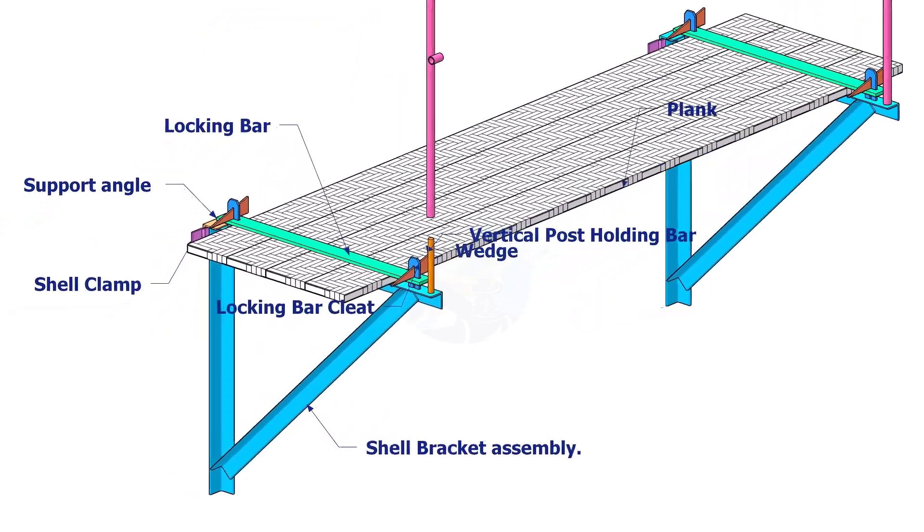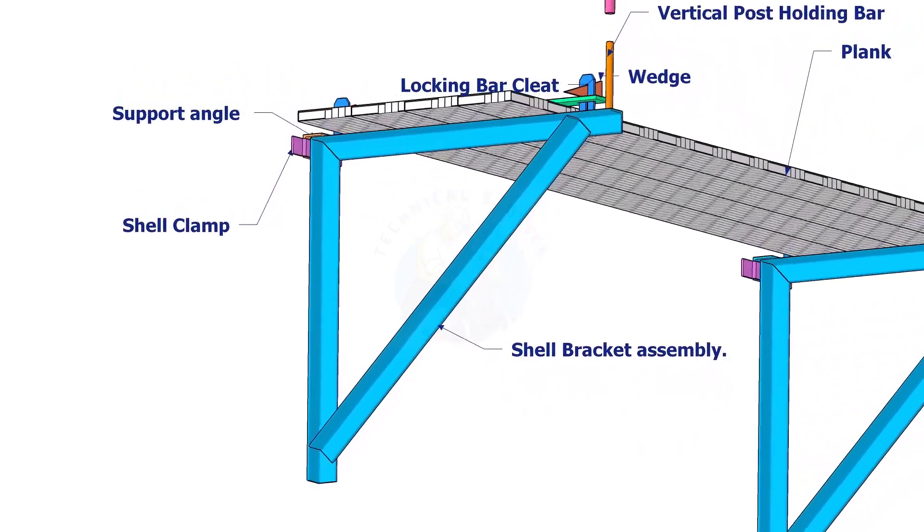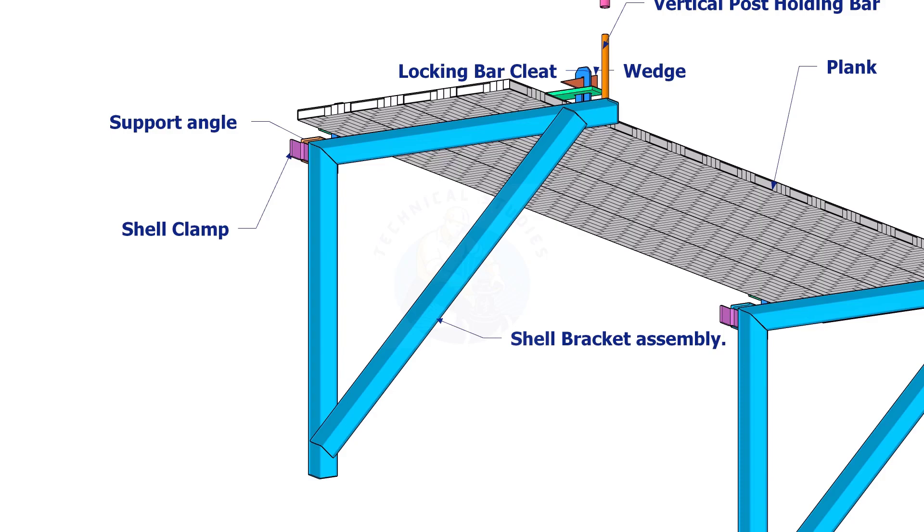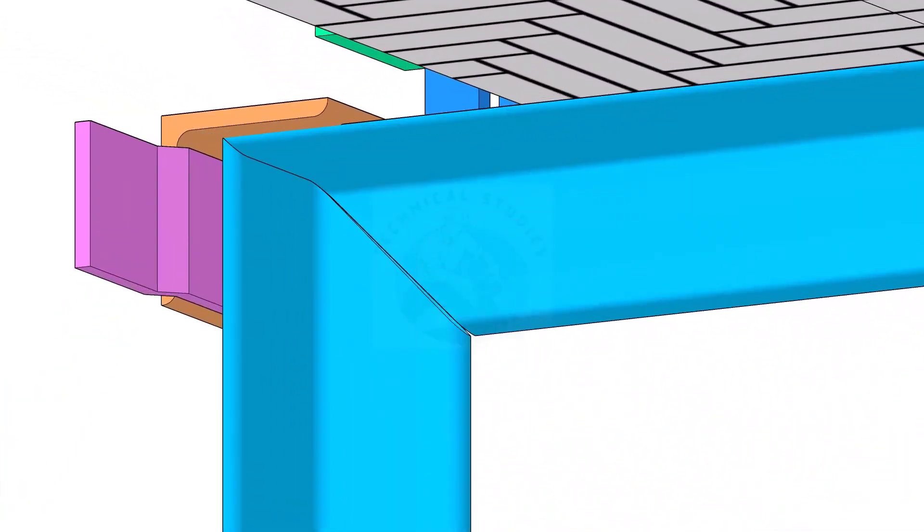Let us check the parts and their functions. Shell Bracket Assembly is the body of the bracket. The part size is given in the drawing. The members of this item shall be fully welded to each other.